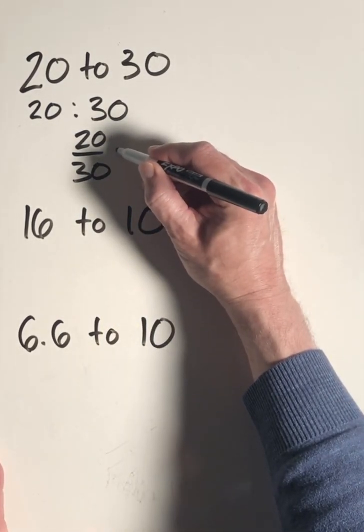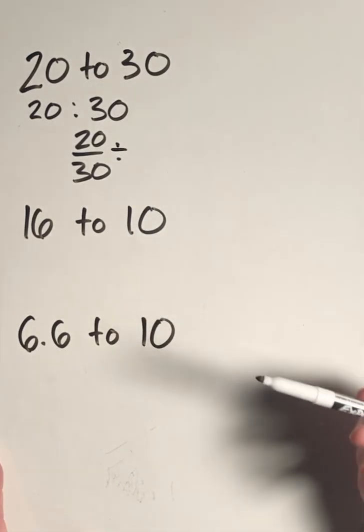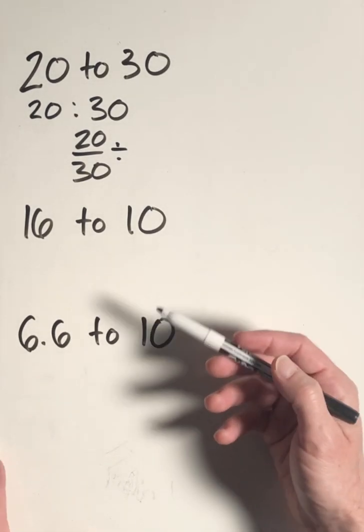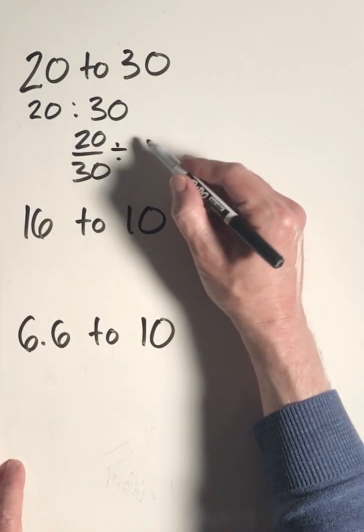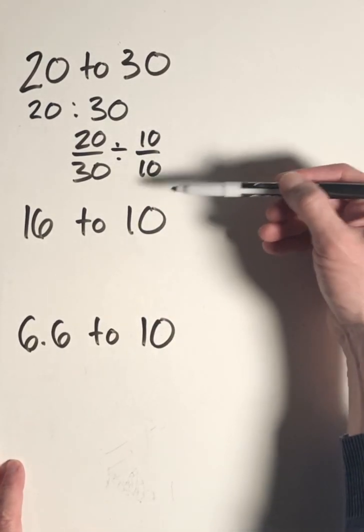Next, you would divide this fraction by some version of one that has a common factor between 20 and 30, hopefully the greatest common factor. The greatest common factor between 20 and 30 would be 10, so the version of one that we're going to divide by is 10/10.